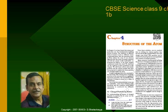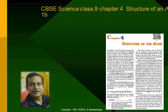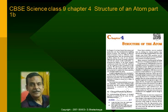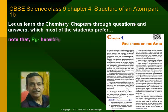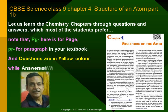CBSE Science, Class 9, Chapter 4, Structure of an Atom, Part 1B. Let us learn the chemistry chapters through questions and answers, which most of the students prefer. Note that PG here is for page, PR for paragraph in your textbook, and questions are in yellow color while answers are in white color.